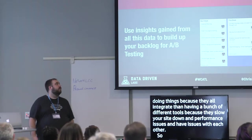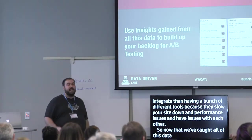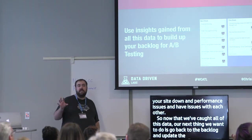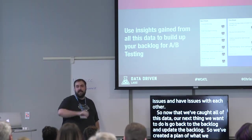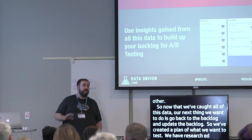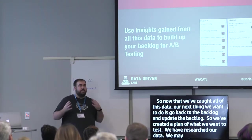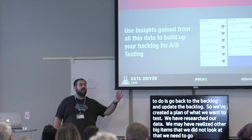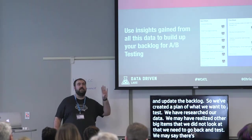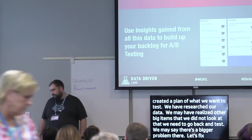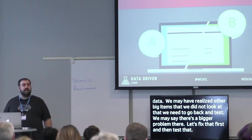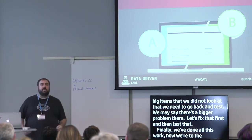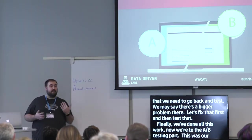Now that we've collected all this data, we go back to the backlog and update it. We've created our plan, researched our data, and may have found bigger items we didn't originally consider. We might realize there's a bigger problem to fix first. And finally, after all this prep work, we're ready to get to the A/B testing part.